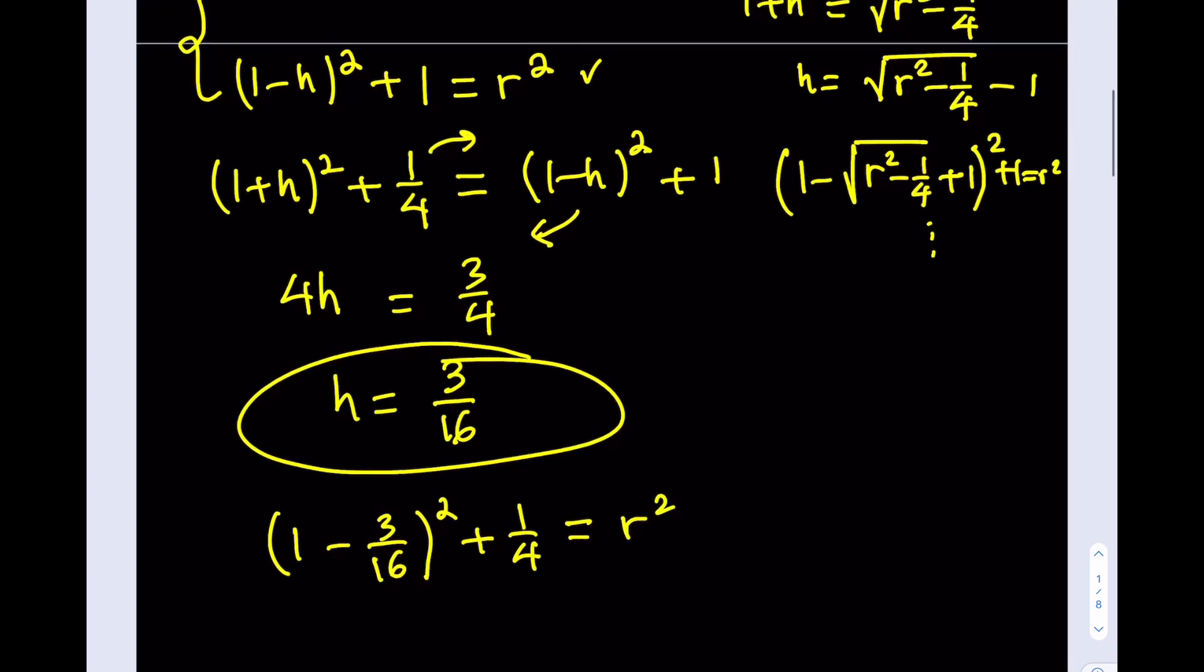Squared plus 1 over 4, and that needs to equal r². Right? Oops, that shouldn't be a 1 fourth, that should be 1. All right, so (1 - h)² plus 1 is equal to r². Cool.